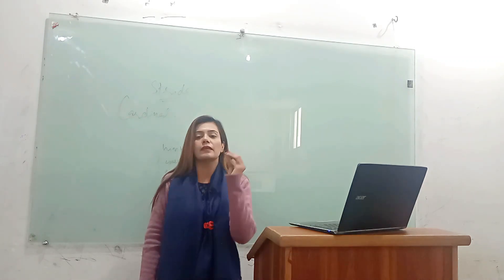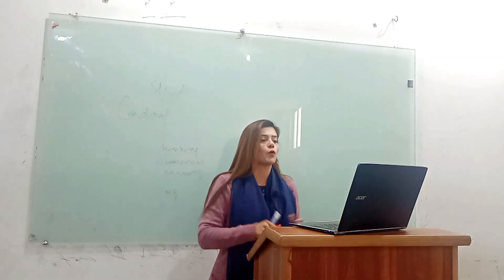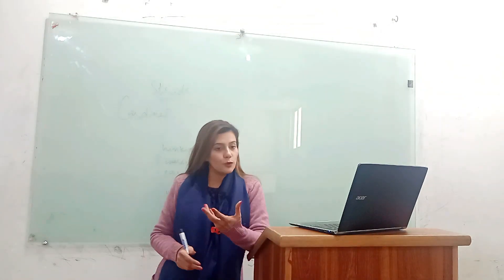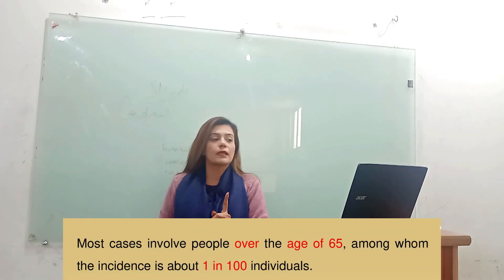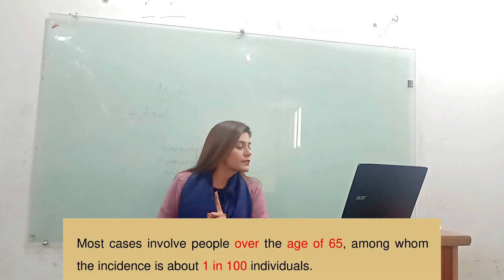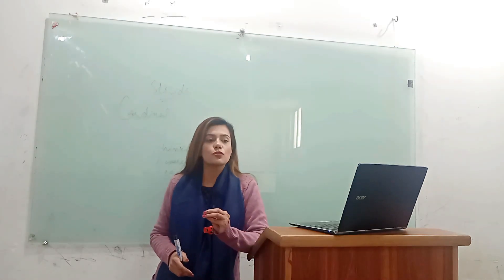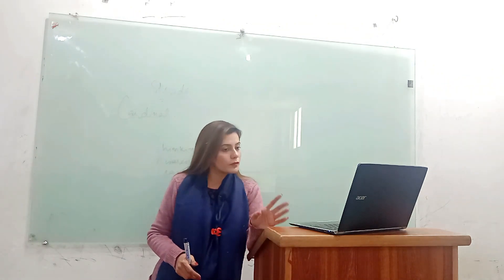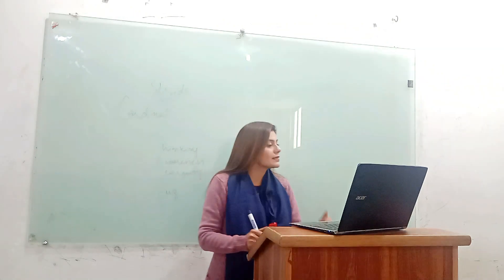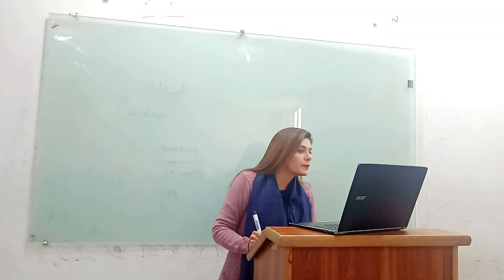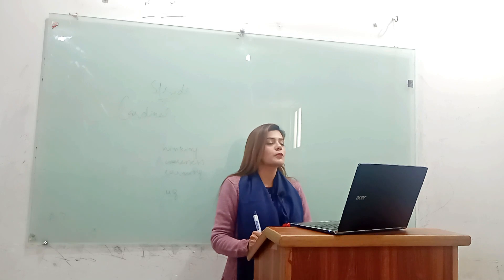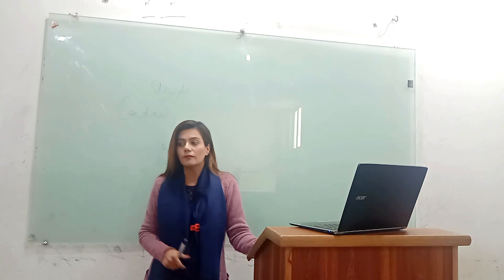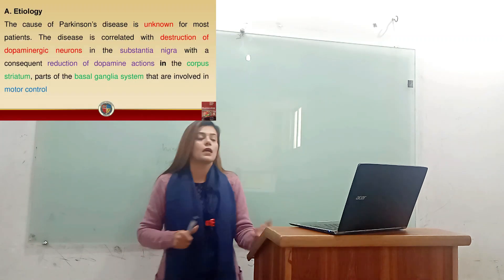Parkinson's disease is commonly observed in aged people. It is common over the age of 65, and one out of every 100 people among patients aged 65 are suffering from the disease. Now we are going to discuss the etiology. What does etiology mean? Cause — the cause of the disease.